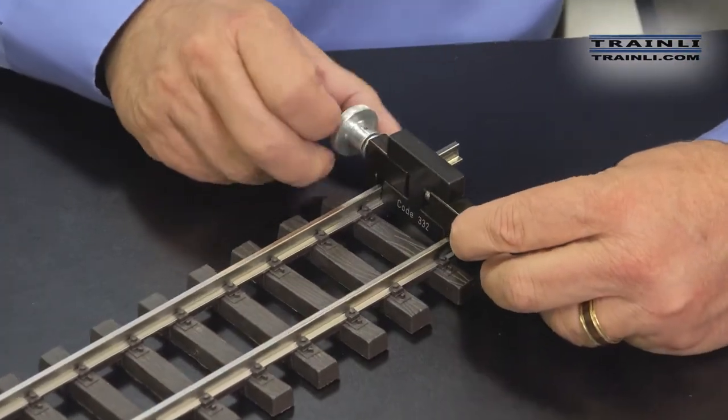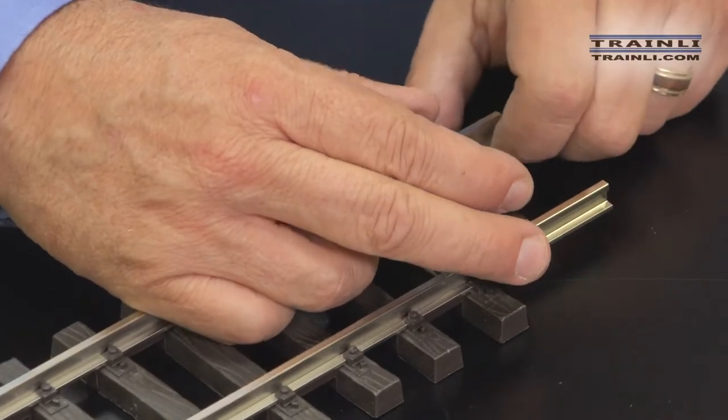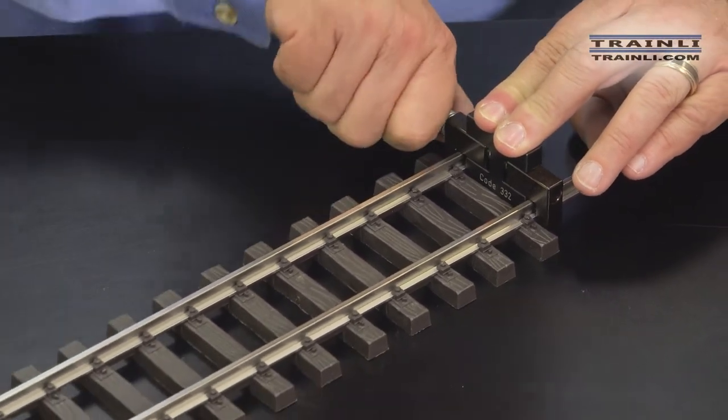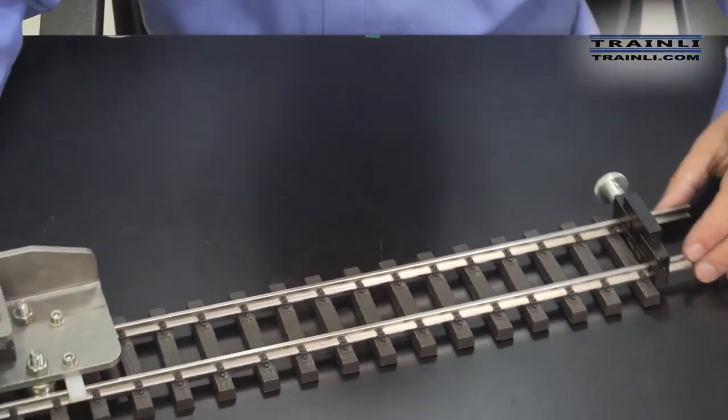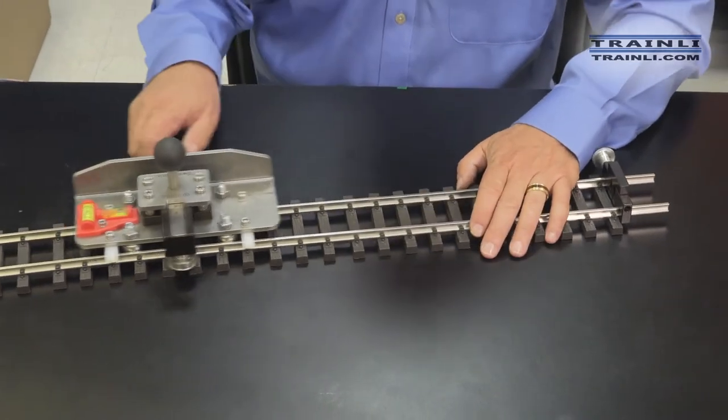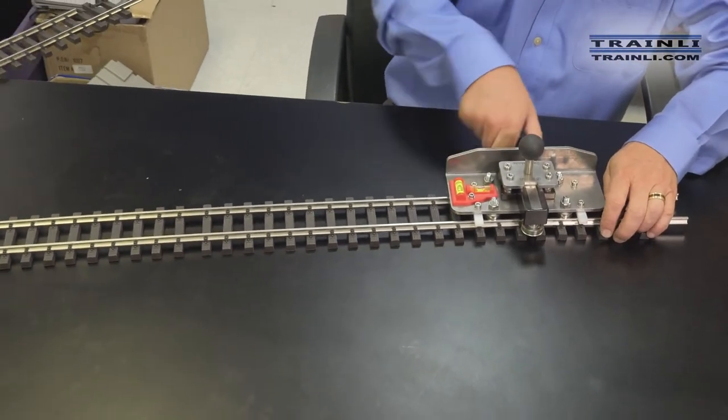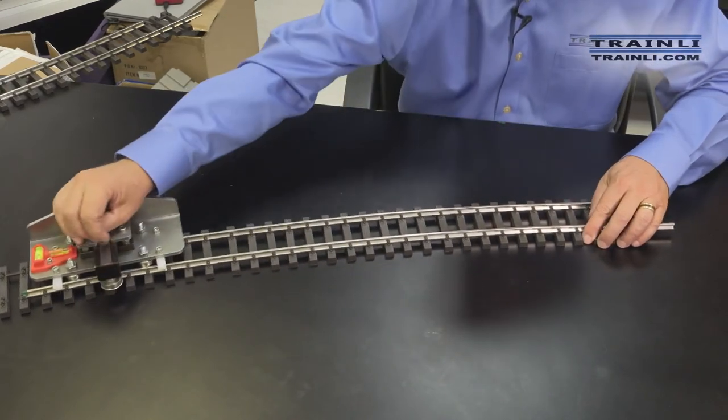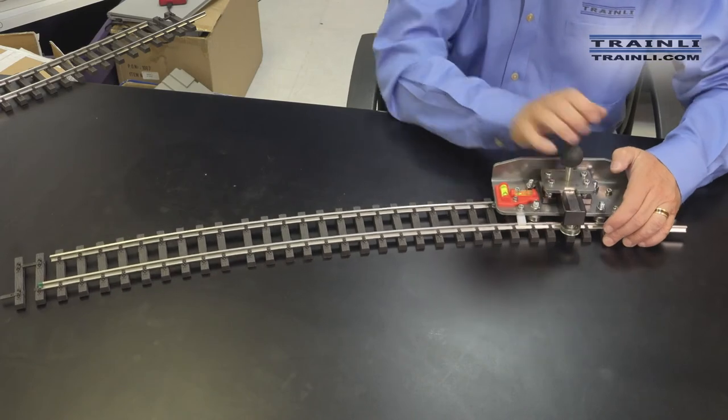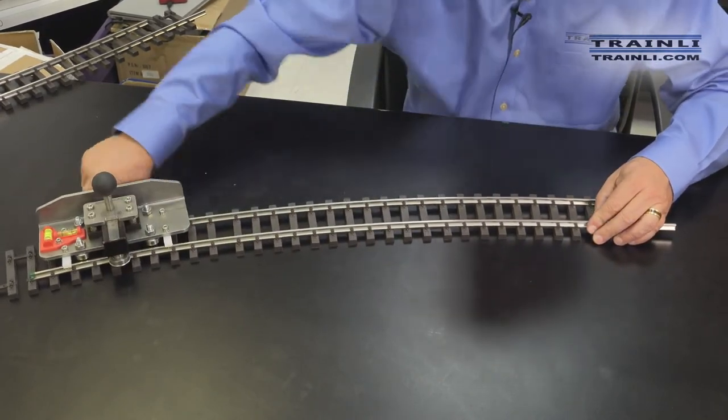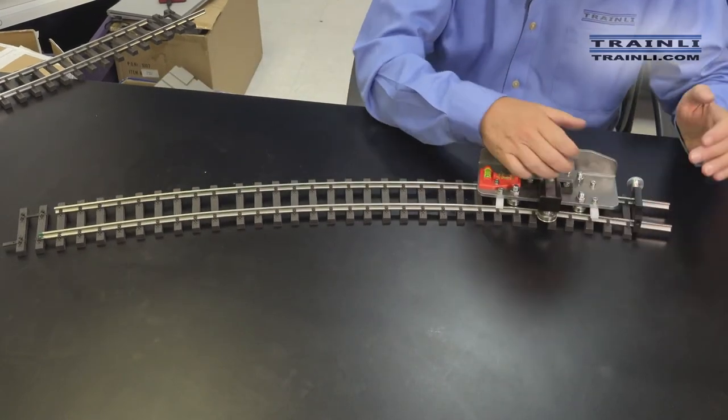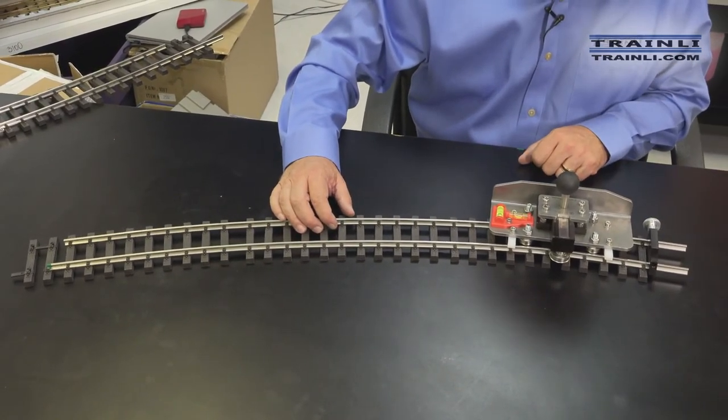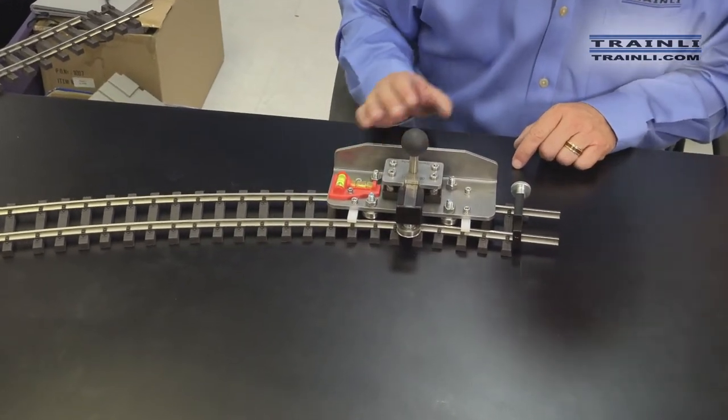This clamps on right here on the track. And you hold it down so it's nice and flat on top of the rails. And that will hold these rails in place as we bend the track. Crank this up. So as you can see, we have a nice sharp radius here and this end of the track has stayed in place.